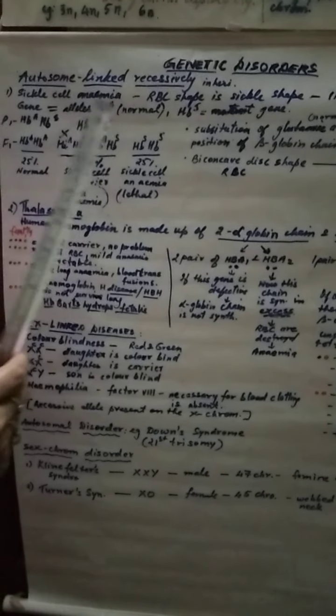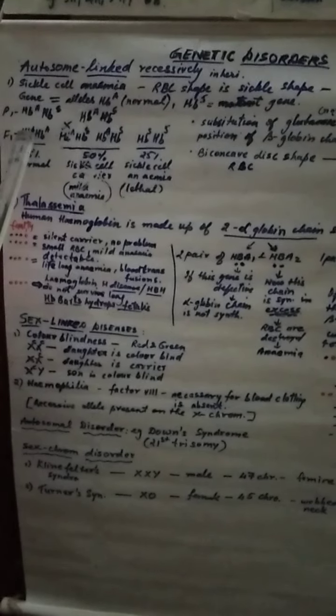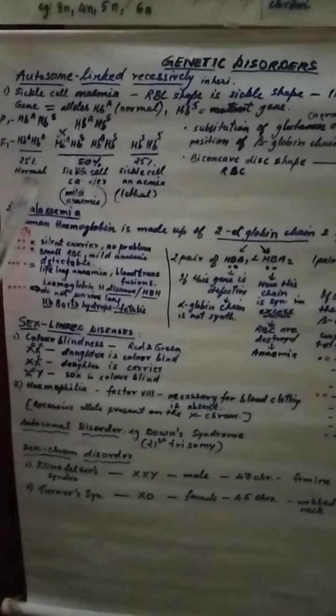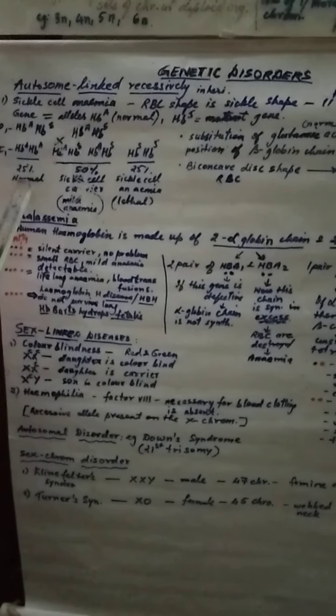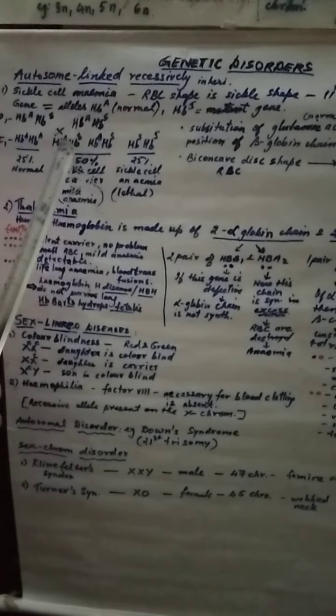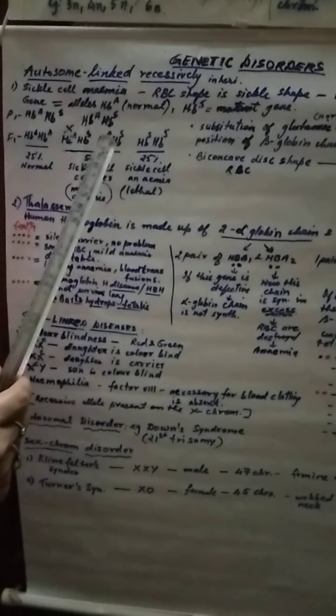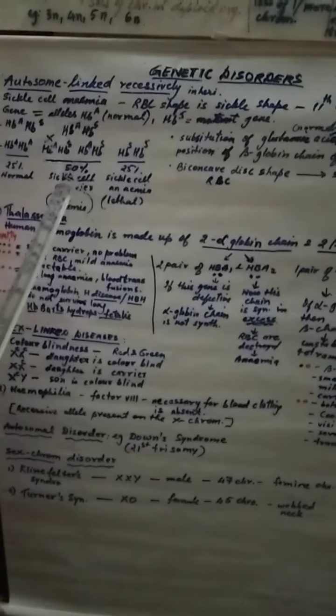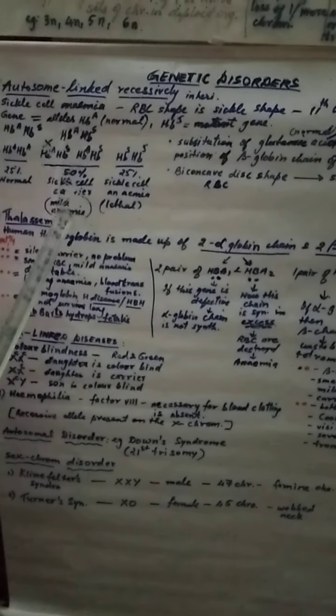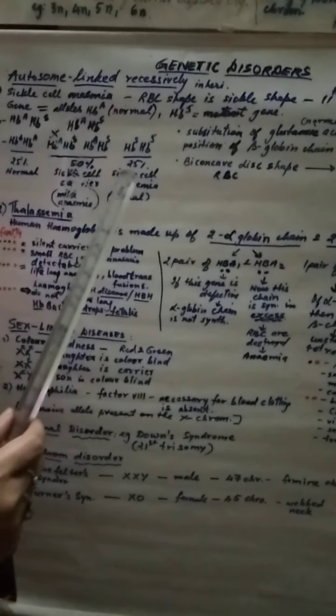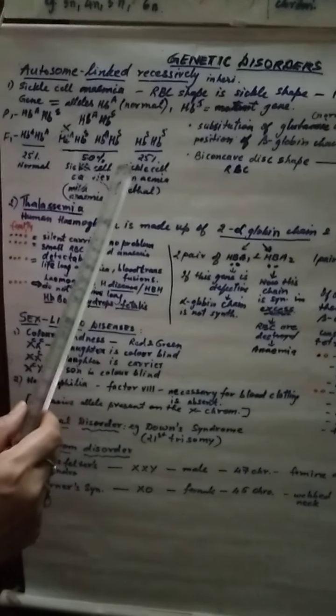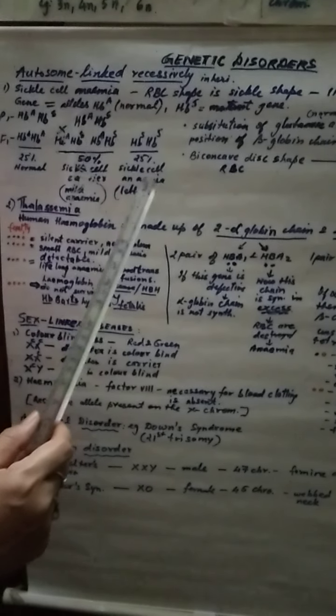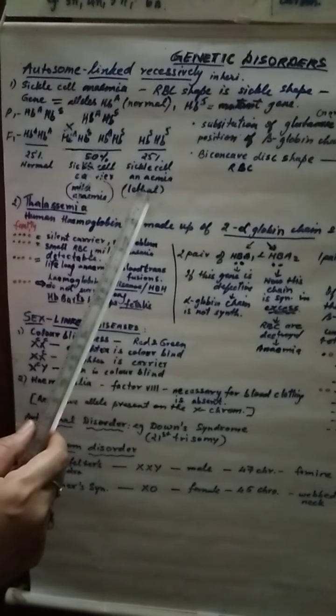If the heterozygous condition or carrier parents are crossed, you can see S is there in both of them. You will get F1 the four conditions. In these four conditions HbA HbA is normal, so 25%. These will be both hetero condition, so 50% will be sickle cell carrier and they will have mild anemia. But the last one offspring, both S are present. Such a condition is called sickle cell anemia which is very lethal and harmful.